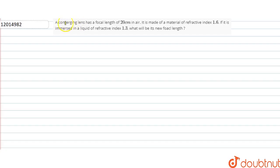In this question, we have given a converging lens with focal length 20 cm. The material has refractive index 1.6. Now we will add a liquid to it, which has refractive index 1.3.